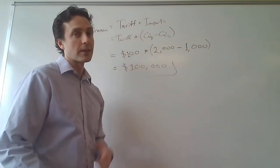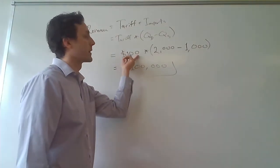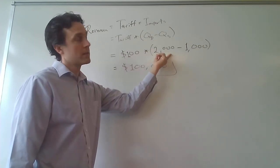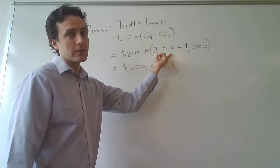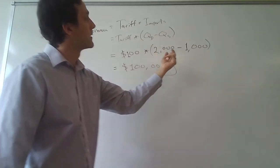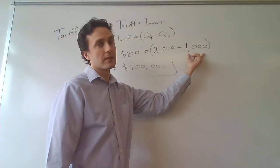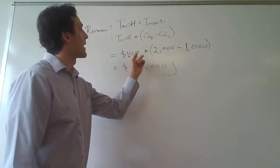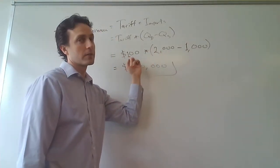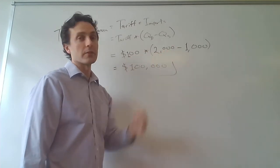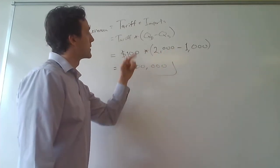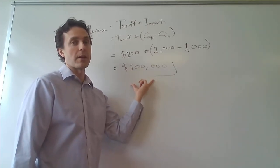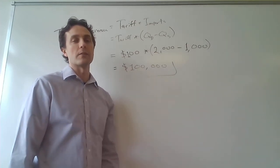In this problem, the tariff is $100, the quantity demanded domestically is 2,000 cars, and the quantity supplied domestically is 1,000 cars. So it's going to be a $100 tariff times 1,000 (2,000 minus 1,000 equals 1,000). Therefore, $100 times 1,000 means the government revenue generated by this tariff will be $100,000.